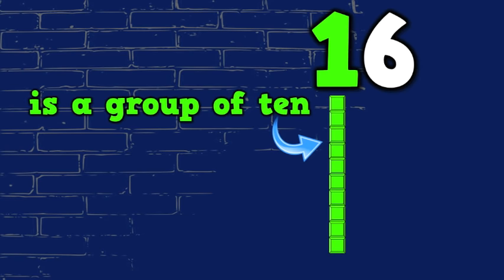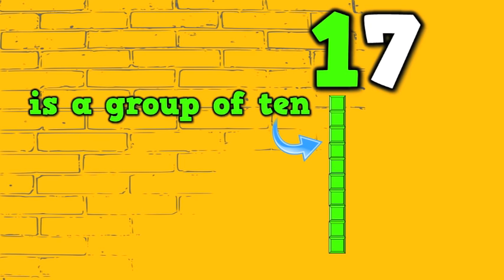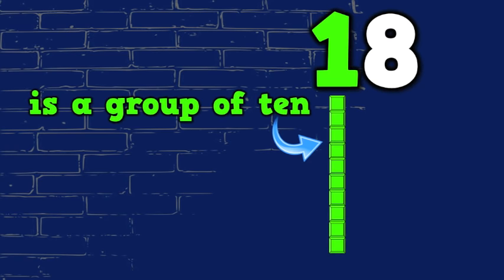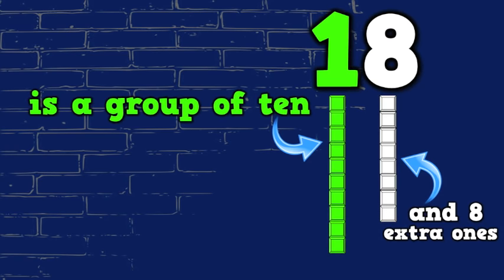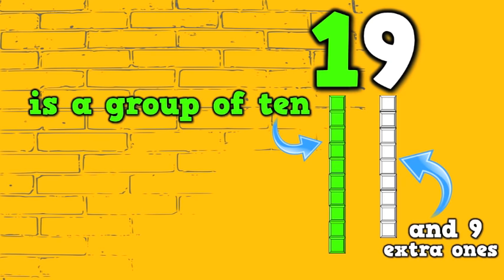Fifteen is a group of ten and five extra ones. Sixteen is a group of ten and six extra ones. Seventeen is a group of ten and seven extra ones. Eighteen is a group of ten and eight extra ones. Nineteen is a group of ten and nine extra ones.